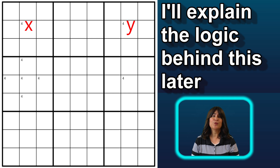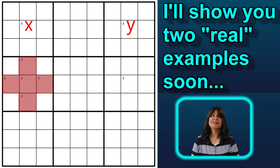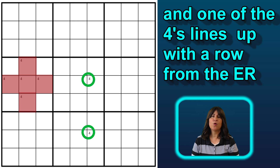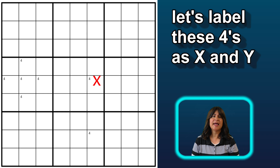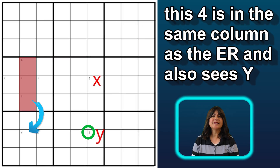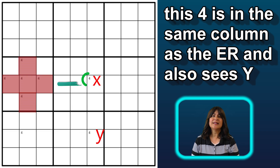I'll explain the logic behind this when we get to a real example, but let me review this pattern one more time using the same cross shape. But this time the conjugate pair is in column 6, so now we have our rows and columns switched. This example is exactly the opposite situation — we have a conjugate pair of 4s now in a column, and one of the 4s lines up with a row from the empty rectangle. Let's label that 4 as x and this 4 as y, and now we can eliminate any 4 that is in the same column as the empty rectangle and also sees the y candidate. This 4 is in the same column as the empty rectangle and sees the y candidate from the conjugate pair. The x candidate is in the same row as the empty rectangle, so we look to the column to find the cell that sees the y candidate, and now we can eliminate that 4.